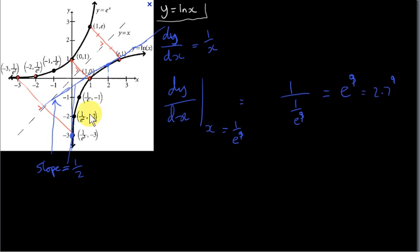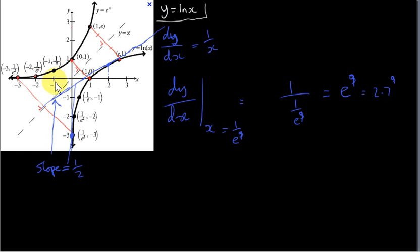So the slopes of the tangent lines are heading towards infinity as x approaches 0 from the right. It makes no sense to approach 0 from the left because the function y equals ln of x is not defined for negative values of x.